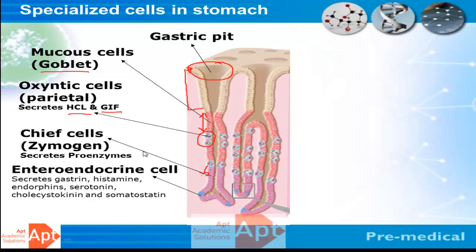Pepsinogen is secreted in inactive form because pepsin is responsible for protein digestion — if it were active here, it would digest the gastric wall itself. When pepsinogen moves to the parietal cells, it comes in contact with hydrochloric acid, which activates it into pepsin. The pepsin then flows over the mucus and reaches the stomach area for digestion. Below the zymogen cells are the enteroendocrine cells, responsible for secreting a large number of hormones.